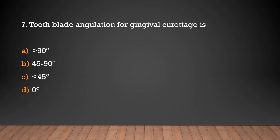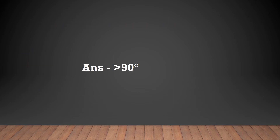Tooth-blade angulation for gingival curette changes: greater than 90 degrees, 45 to 90 degrees, less than 45 degrees, or 0 degrees? The answer is greater than 90 degrees — the tooth-blade angulation for gingival curette is greater than 90 degrees.